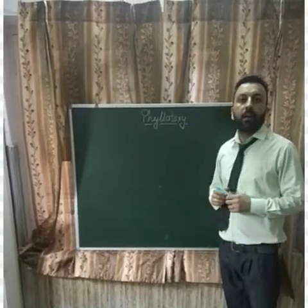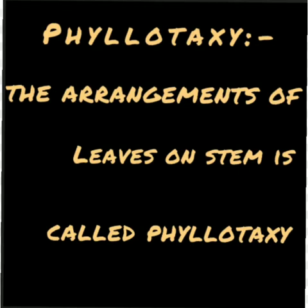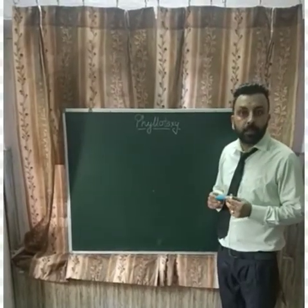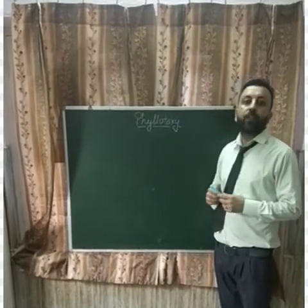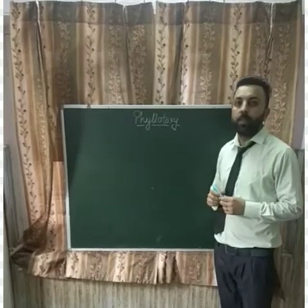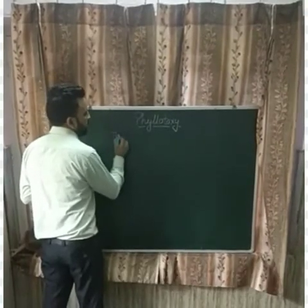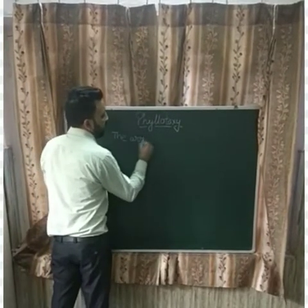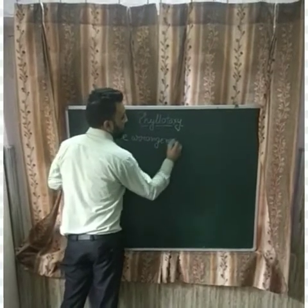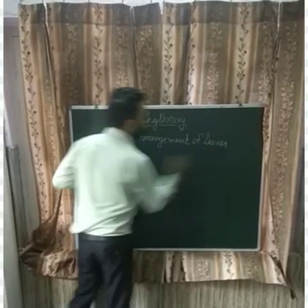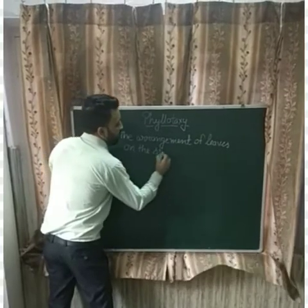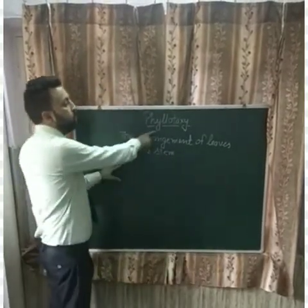Phyllotaxy means the arrangement of leaves on the stem. There are different types of arrangement of leaves on the plant — some arrangements are alternate, some are opposite, some are whorled. Phyllotaxy means the arrangement of leaves on the stem, and it is known as Phyllotaxy.